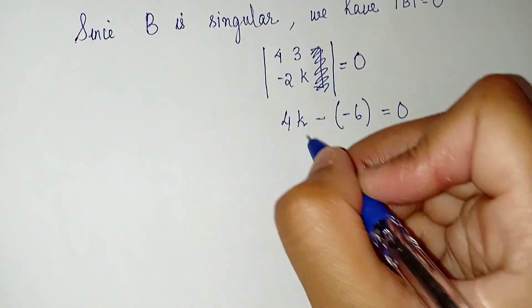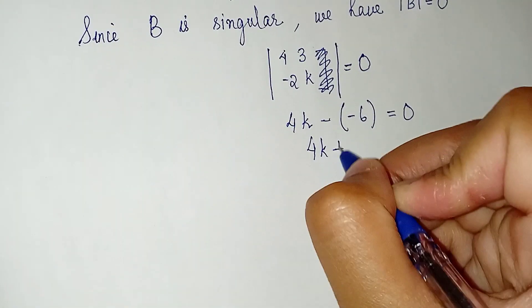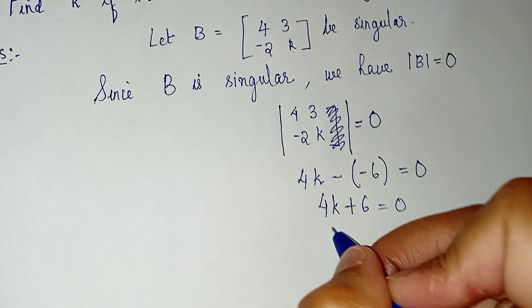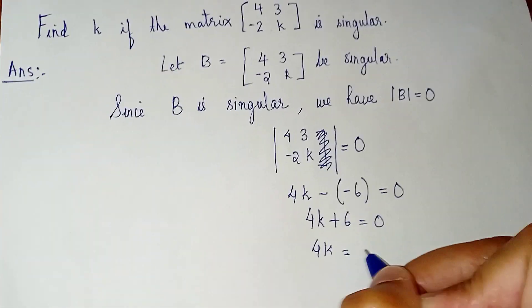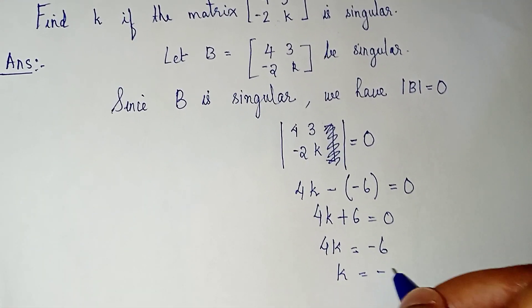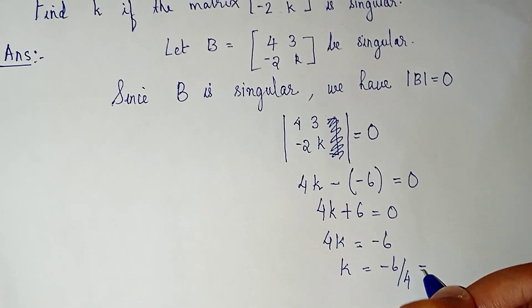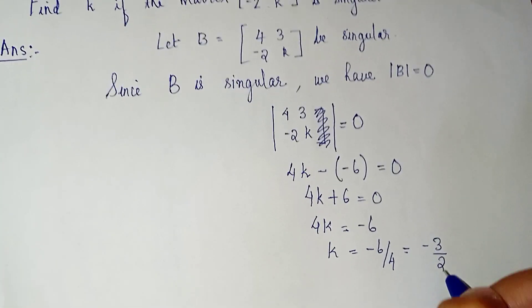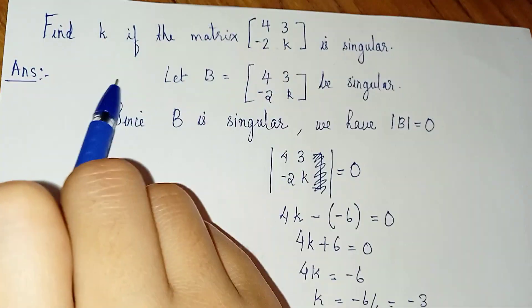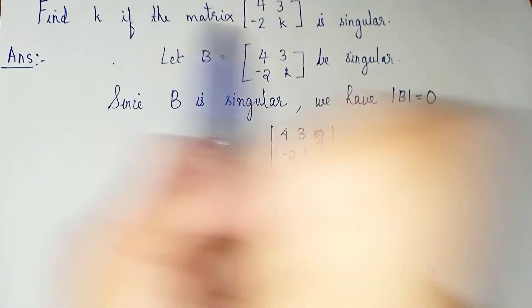4k plus 6 equals 0. 4k is equal to -6. k is equal to -6 by 4, which is -3 by 2. So we found the value of k, which is -3/2.